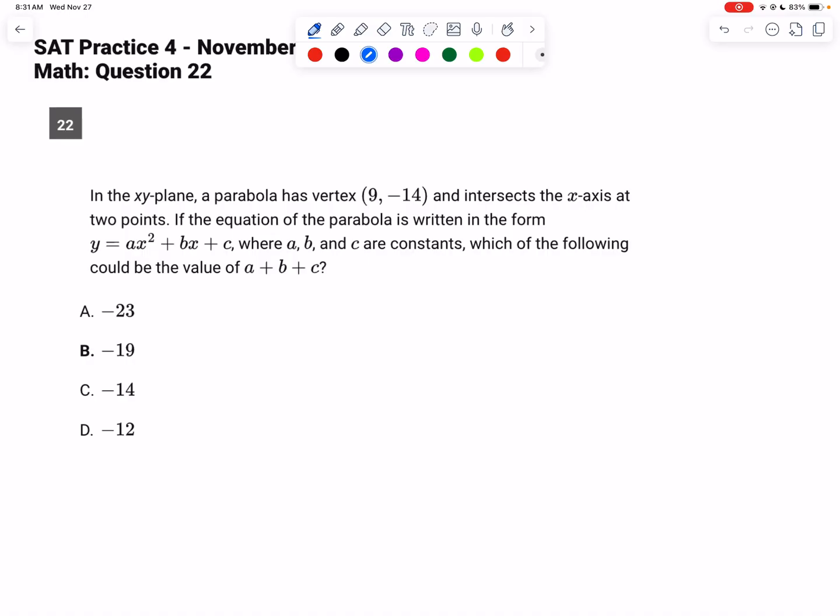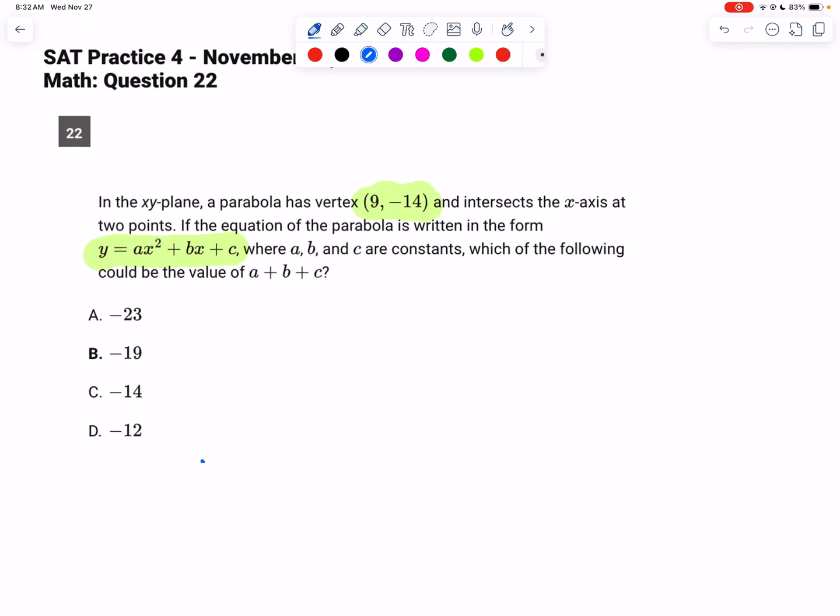Alright, so here we have an equation that is super general in standard form, and we have a vertex. So what I'm going to do is I'm going to take this vertex and I'm going to put this in vertex form because I think that's going to be helpful. Vertex form of a quadratic equation is y equals a times x minus h squared plus k, where the vertex is going to be h comma k.